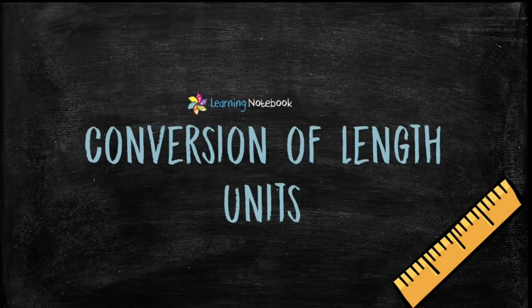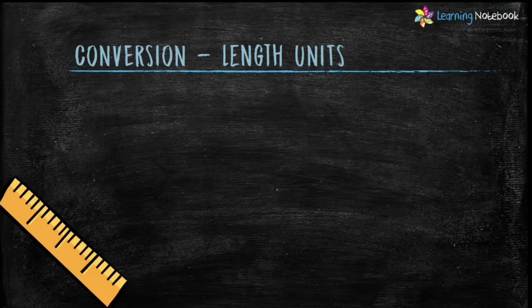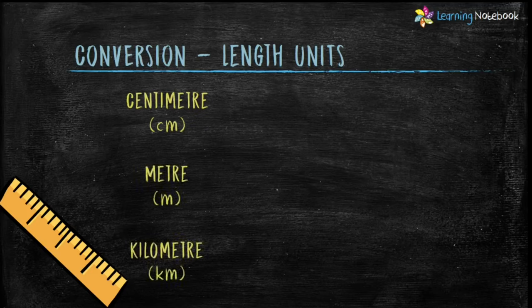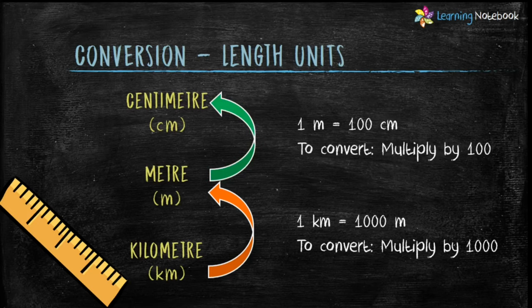Now let's see conversion of length units. We have learned three standard units of length: centimeter, meter, and kilometer. Let's see how to convert kilometer into meter and meter into centimeter. One kilometer equals to one thousand meters, so to convert kilometers into meters we multiply by one thousand. For example, 2 kilometers equals to 2 into 1000, which equals to 2000 meters.